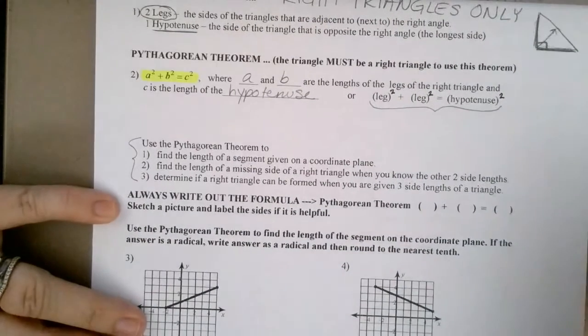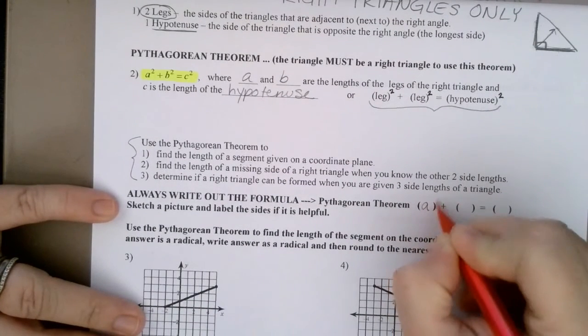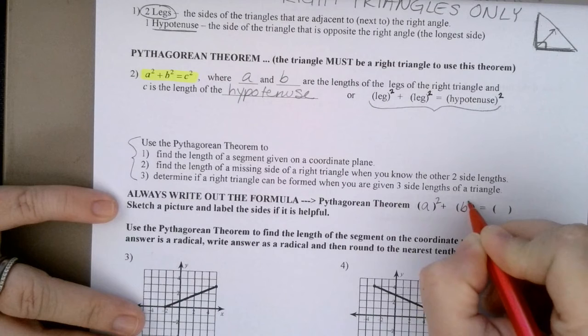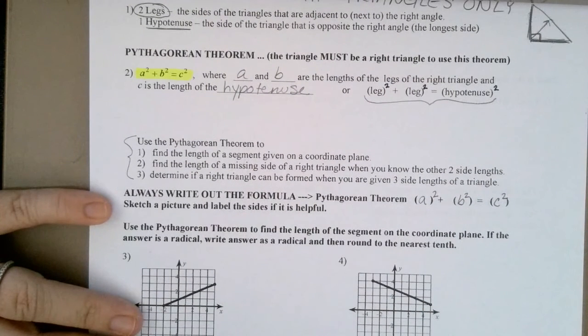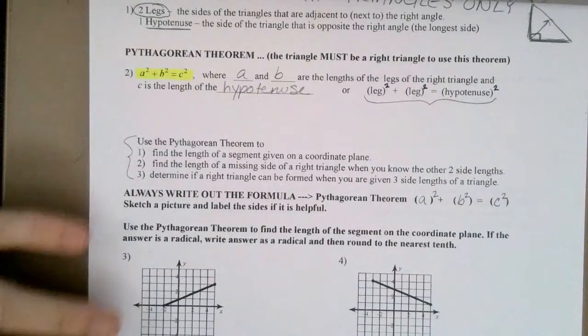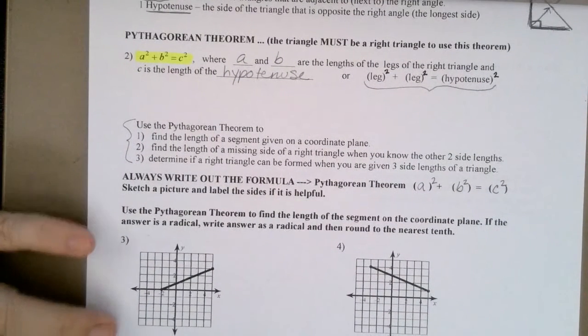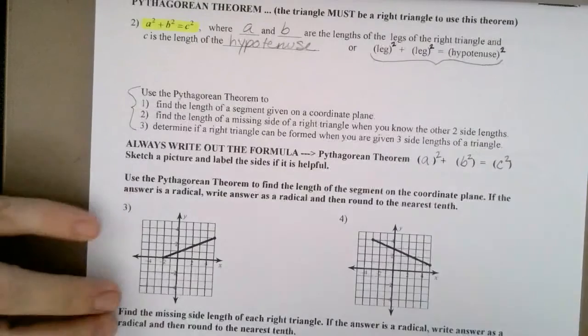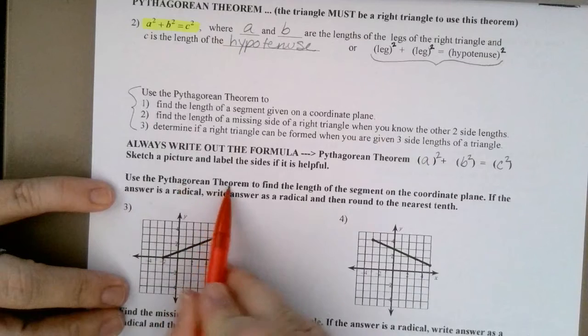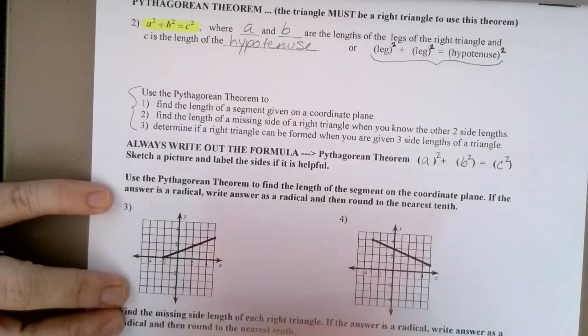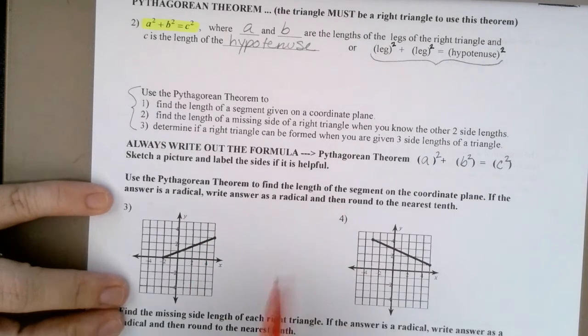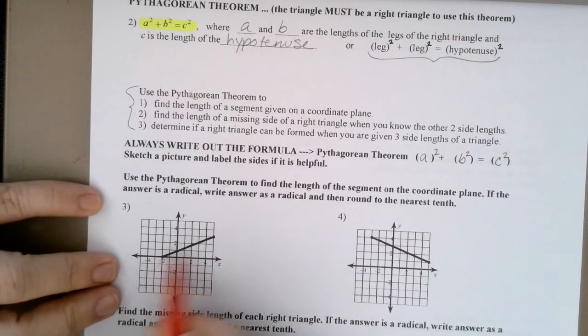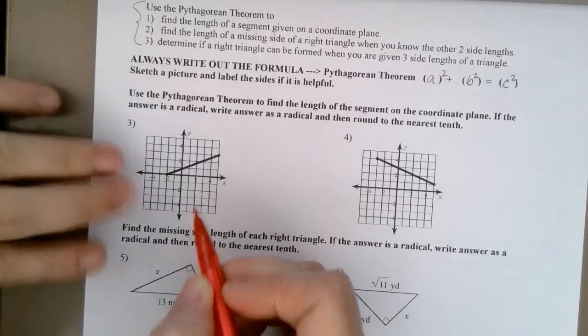Always write out the formula. The Pythagorean theorem is A squared plus B squared equals C squared. You will see me always putting parentheses around whatever it is that I'm putting in there. So here's my first two types of problems. Use the Pythagorean theorem to find the length of the segment on the coordinate plane. If the answer is a radical, write the answer as a radical, and then round to the nearest tenth. So it looks like they want both answers. Now, on last night's homework, you just used the distance formula, didn't you?